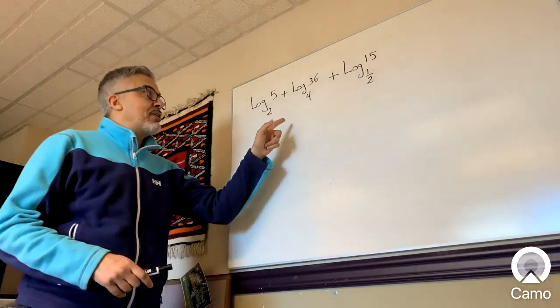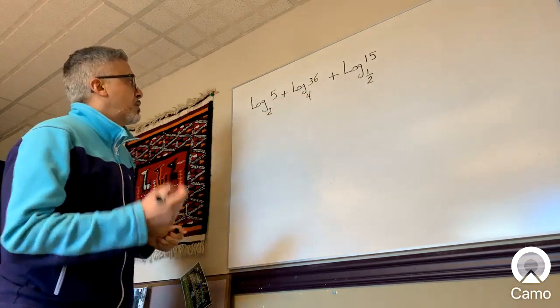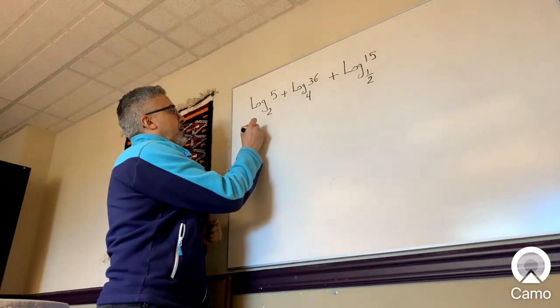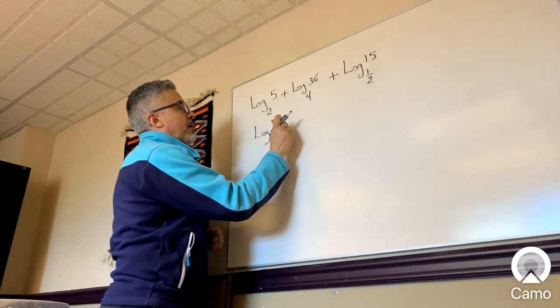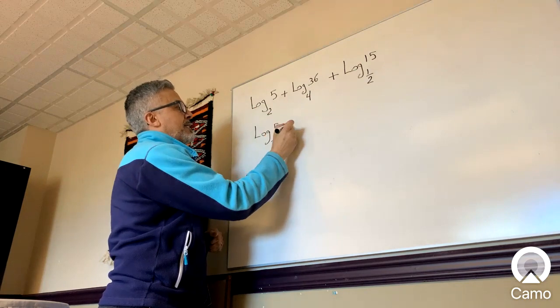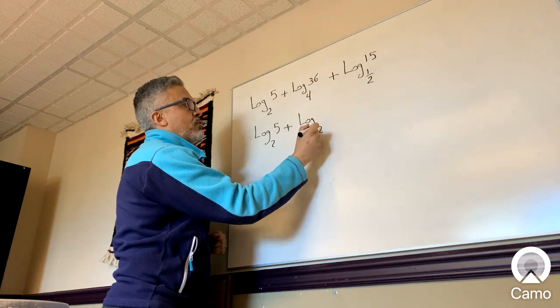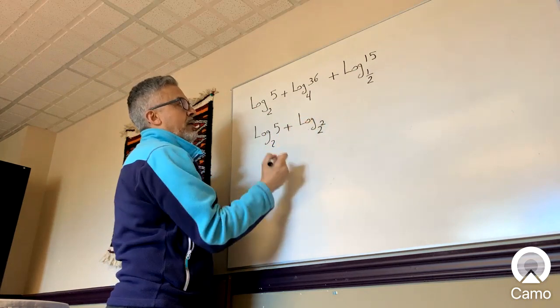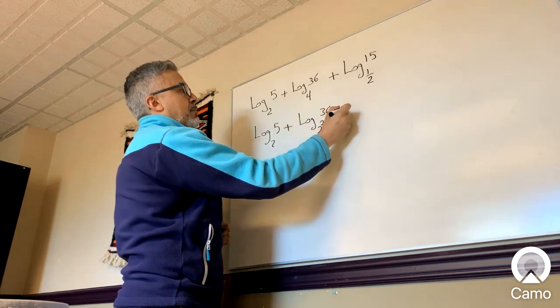So what these have in common is we could make all of these log base 2. So the shortcuts, plus this here, the 4, I know it's 2 squared, so 36 plus...